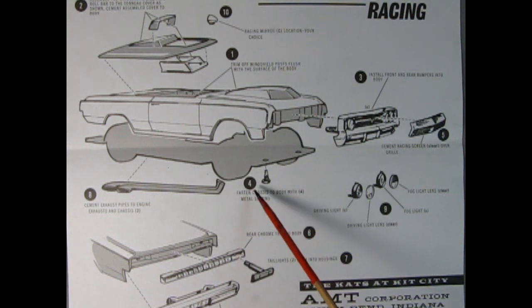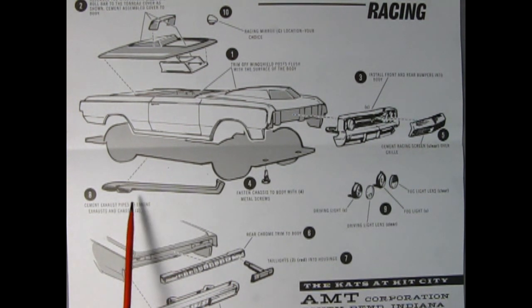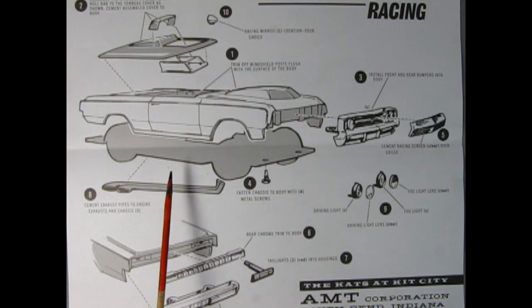Then use the four fastening screws to screw the chassis to the bottom of the body. Next up, you want to add in your clear racing screen to the grille. Then turn the car around to the back, add your rear chrome trim panel onto the body and the stock tail lights gluing in there. Then cement the stock exhaust pipes to the chassis as well, connecting it at the engine by the exhaust.